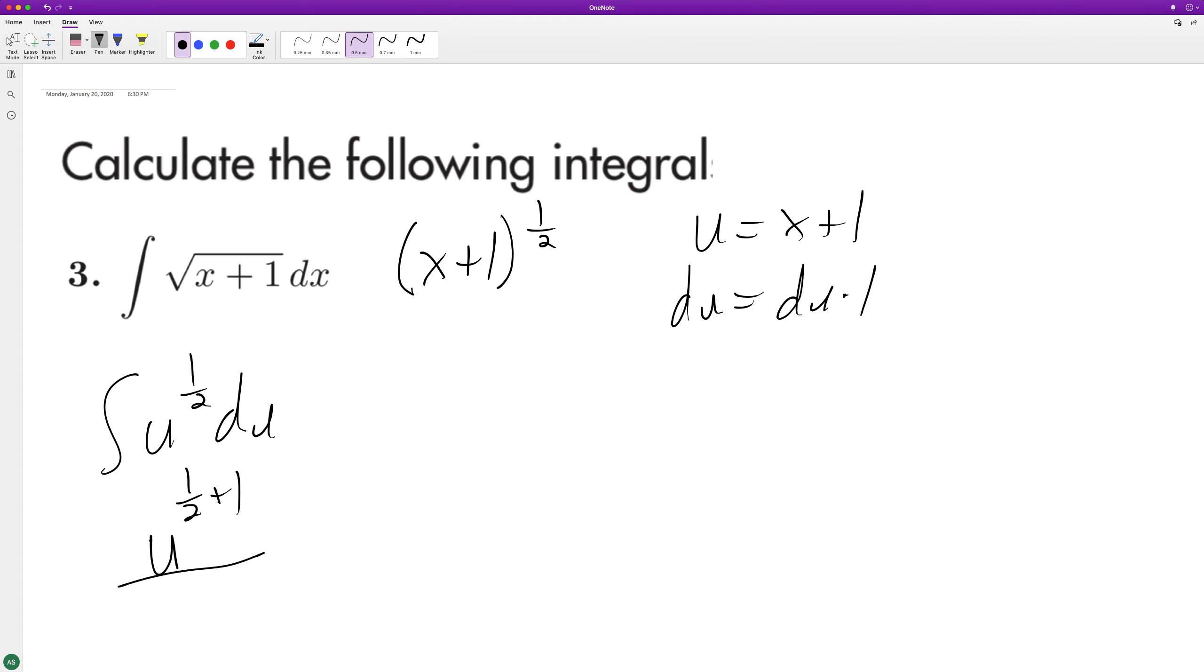exponent and divide by one-half plus one plus C. u raised to the three-halves over three-halves, which becomes two-thirds. Then substituting back in for u, we get two-thirds times x plus one raised to the three-halves plus C, and that's it.